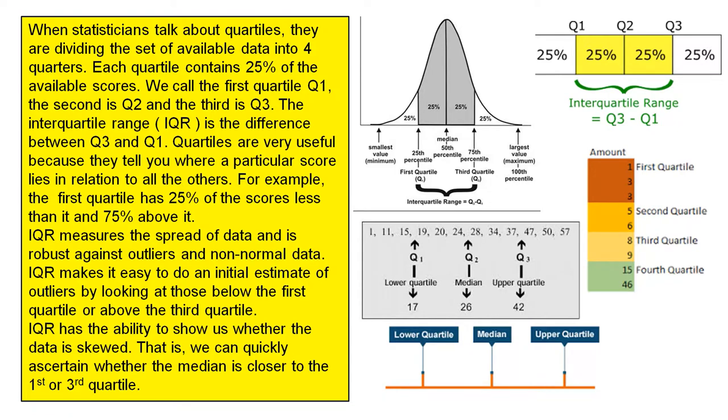Quartiles are very useful because they tell you where a particular score lies in relation to all the others. For example, the first quartile has 25% of the scores less than it and 75% above it.